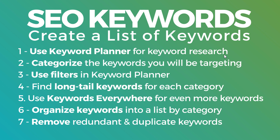You can use the Keyword Planner for keyword research — it's completely free. You can see search volume, how competitive different keywords are, and if you run Google Ads, you get an idea of advertiser bids. You want to come up with a list of keywords and categorize them. Then use filters in the Keyword Planner to find long-tail keywords for each category — the first four steps are very connected. You can optionally use Keywords Everywhere for even more long-tail keywords.